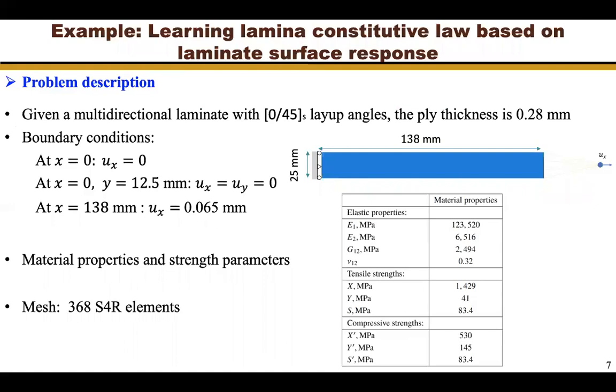To demonstrate the framework, we use a multidirectional laminate with 0/45 symmetry layup angles. This is the model we used for demonstration. It is clamped at the left surface and we apply displacement at the right surface. The material properties and strength parameters are listed in this table. By trial and error convergence study tests, we show that this model converges with 368 element size.